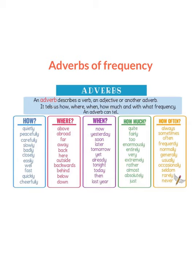An adverb describes a verb, an adjective, or another adverb. It tells us how, where, when, how much, and with what frequency. For example, an adverb can tell how — quietly, peacefully, carefully; where — above, abroad, far; when — now, yesterday, soon; how much — quite, fairly, too; and how often — always, sometimes, often.